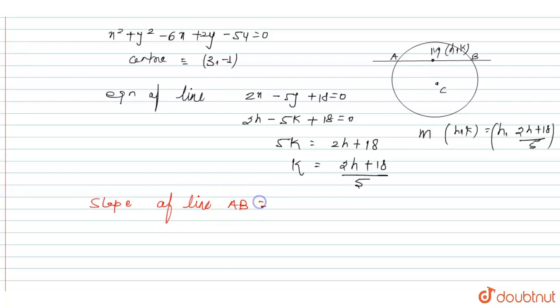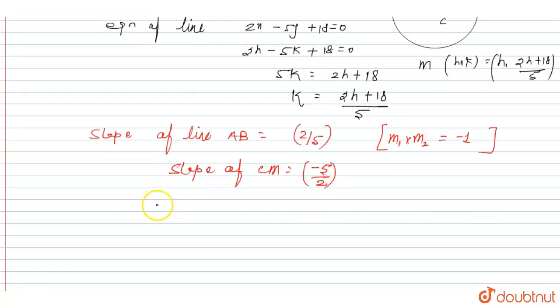Slope of line AB is equal to 2 by 5. CM is perpendicular to AB, then slope of CM can be written as minus 5 by 2 because if two lines are perpendicular to each other then product of their slope is equal to minus 1.